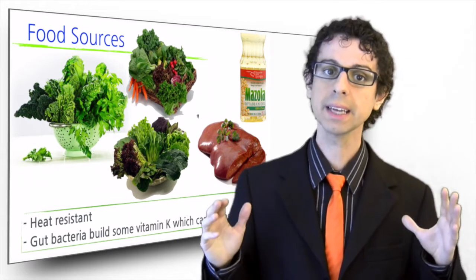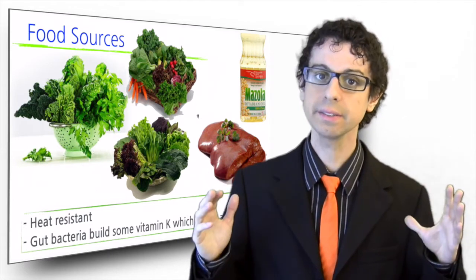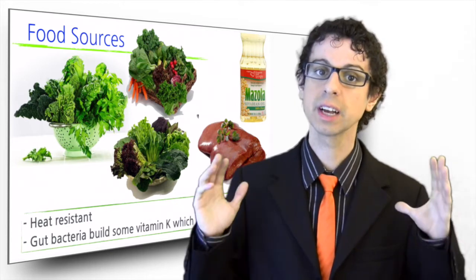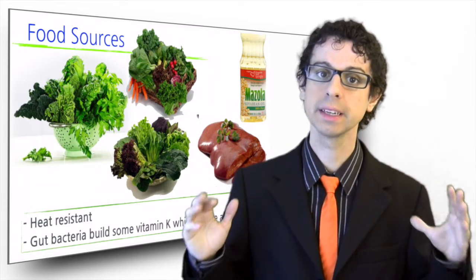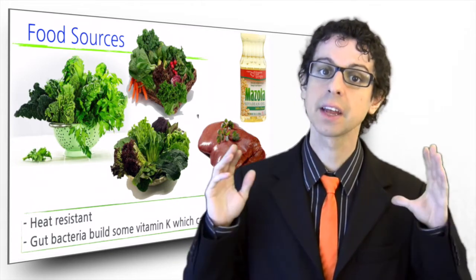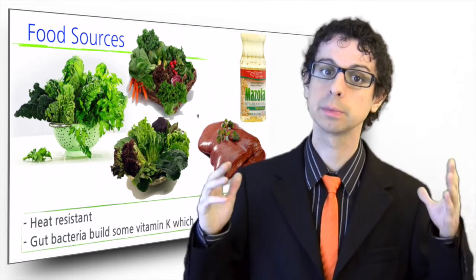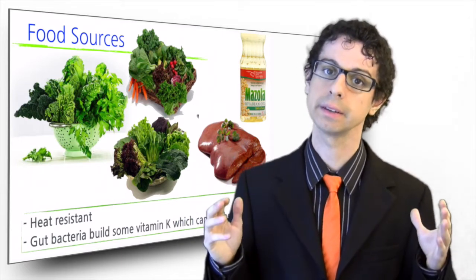In food, vitamin K is mostly found in green leafy vegetables such as spinach, kale, cabbage, turnip greens, dark green lettuce, and then also broccoli, Brussels sprouts, asparagus, peas, soybeans, and green beans.